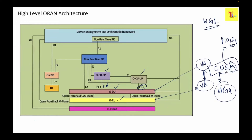The management plane handles configuration management of the radio unit. The user plane sends packets in the form of IQ data. The control plane describes the characteristics of the user plane and always comes before the user plane packet for a particular symbol. This is how Working Group 4 defined the CUSM planes.